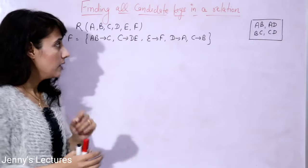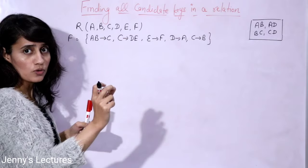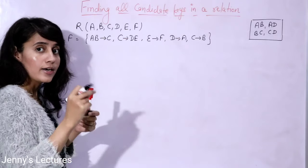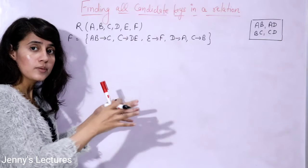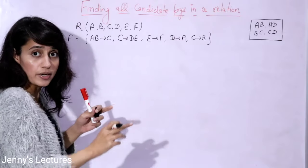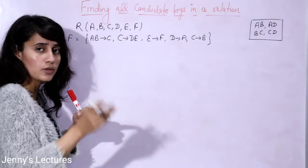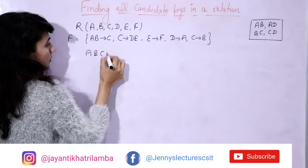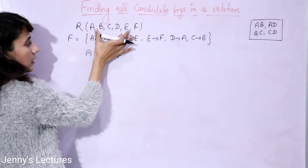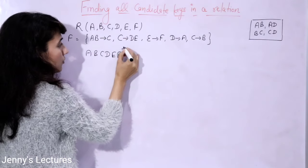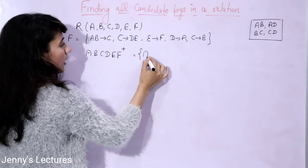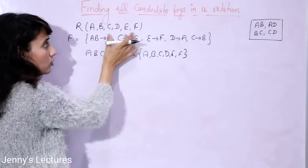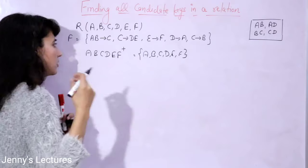The first step of the trick: a candidate key is a minimal super key — a super key whose proper subset is not a super key. A super key is a set of attributes whose attribute closure contains all the attributes of a given relation. Attribute closure, functional dependency — these have been discussed in previous videos. The very first step is: the complete set of attributes is definitely a super key, because taking all the attributes, the closure will contain all attributes of the relation. That is common sense.